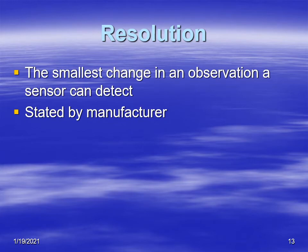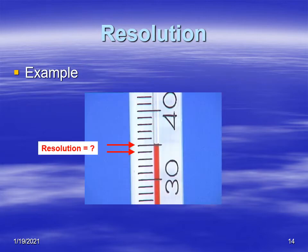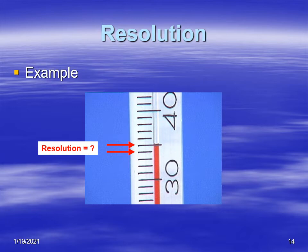Resolution is the smallest change that an observation or a sensor can detect. Usually this is stated by the manufacturer and is indicated by the markings on the scale. If it's a digital readout, that's a little more difficult and you'll have to go into the manual to find the resolution. In this case it would probably be a resolution of maybe one degree Celsius unless the manufacturer tells you something different.